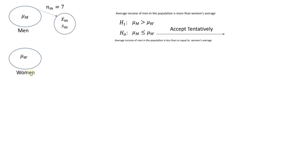We take a sample from the population of men and a sample from the population of women, and we see if what we observe is consistent or likely based on the null hypothesis.